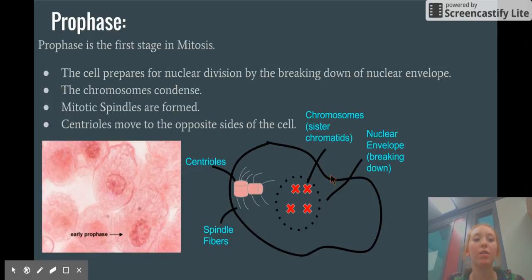Prophase. Prophase is the first stage of mitosis. The cell prepares for nuclear division by breaking down a nuclear envelope. The chromosomes condense, mitotic spindles are formed, and centrioles move to the opposite side of the cell.